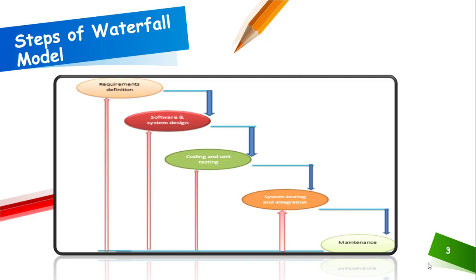There are five steps of the Waterfall Model. First, we have requirement definition. Second, we have software and system design. Then we have coding and unit testing. Then we have system testing and integration. And the last one is maintenance and deployment.